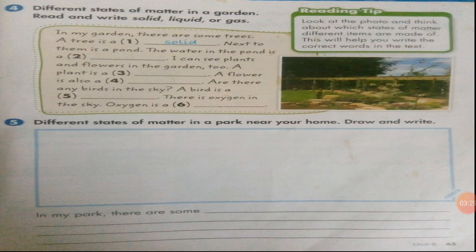Page number 65: different states of matter in a garden. Read and write solid, liquid, or gas — a reading passage is given. Look at the photo of a park and think about which states of matter different items are made of. In my garden there are some trees — a tree is a solid. Next to them is a pond — the water in the pond is a solid, liquid, or gas? Write the correct state.